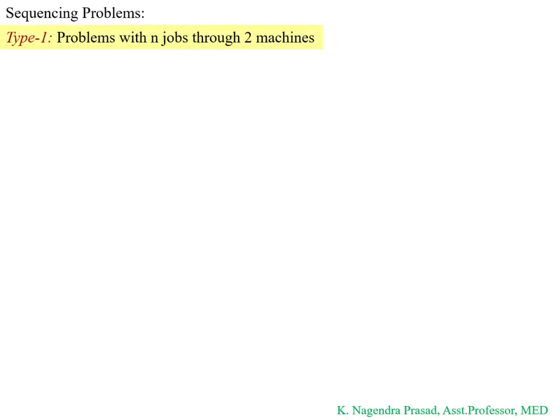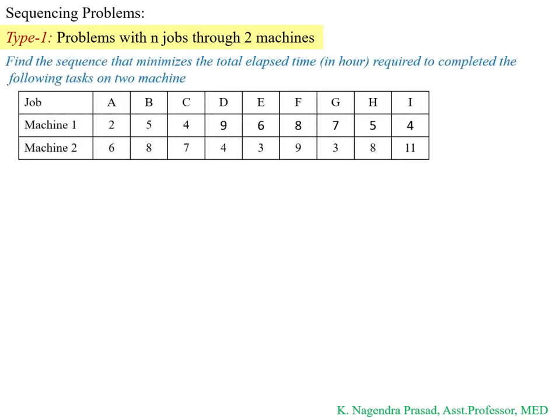Hello everyone. Today I am going to discuss the sequencing problem — problems with n jobs through two machines. I will discuss this with one example problem. We have to find out the sequence which minimizes the total elapsed time and also find out the idle time for each machine. Let's start with our solution.